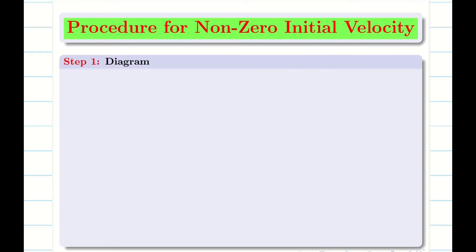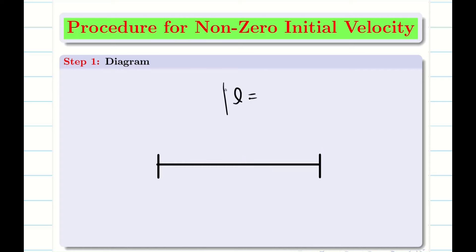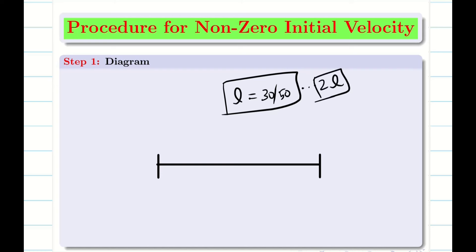Once you identify the problem as non-zero initial velocity, as I said in the previous video, we are going to follow the same steps. Only the initial conditions are going to change. Step 1: we have to draw the diagram and whatever the length is given to us, just assume it as L — whether 30, 50, 5, or even 2L — assume it as L and it is easy for you to solve with one procedure. Since my length is L, I am going to take x equal to 0 to L. My two ends are A and B.